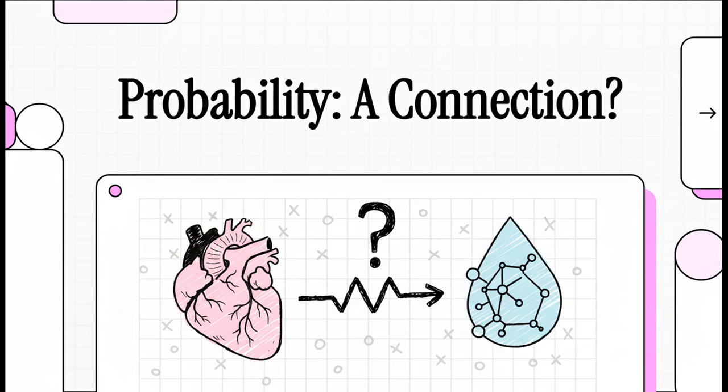Imagine this. In a busy clinic in Ghana, doctors start to notice something. A patient comes in with high blood pressure, and they also have diabetes. Then it happens again. And again. So is that just a coincidence? A random bit of bad luck? Or is there a real, measurable connection?